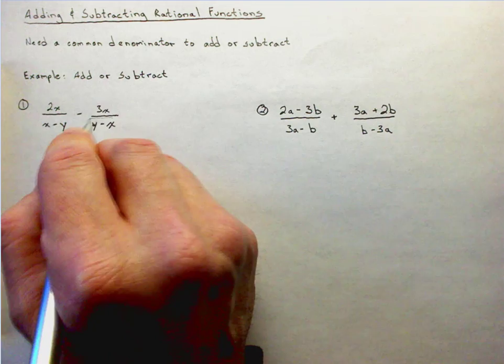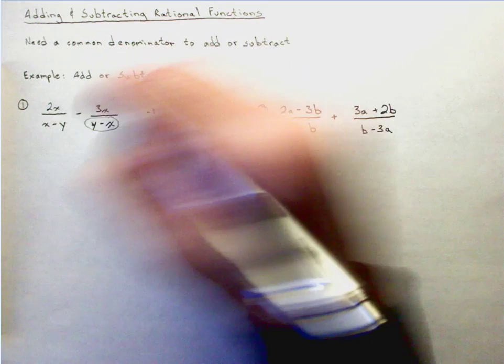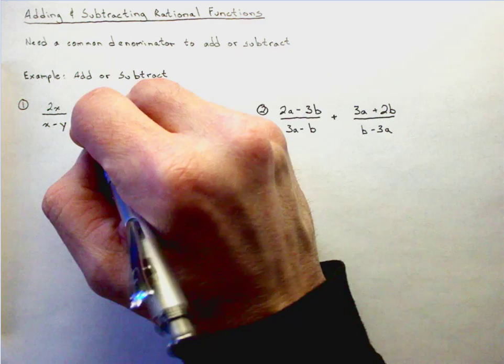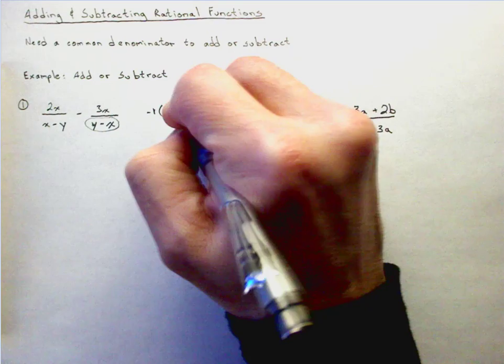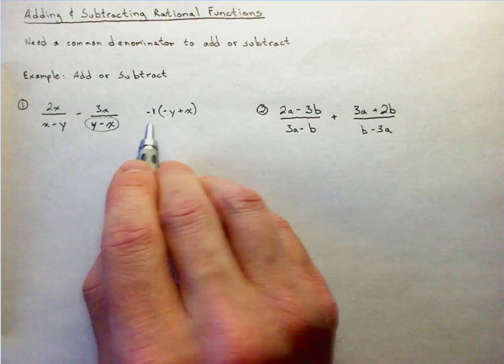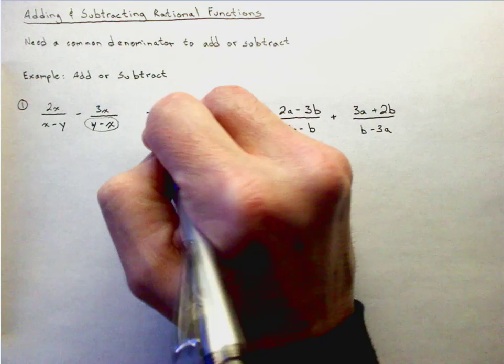If I look at this denominator right here, if I were to factor out a negative one, any time you multiply or divide by a negative one it causes your signs to flip. So y becomes negative y and minus x becomes plus x. We can look at that: negative one times negative y is y, negative one times positive x is negative x.